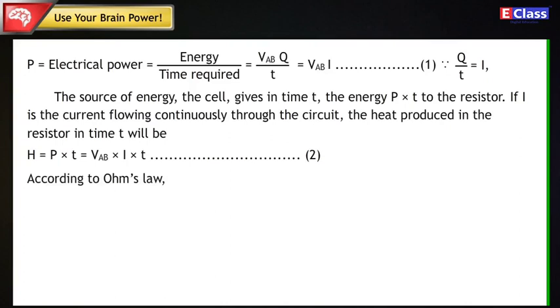According to Ohm's law, VAB = I×R (Statement 3). H = V²AB×T/R (Statement 4).